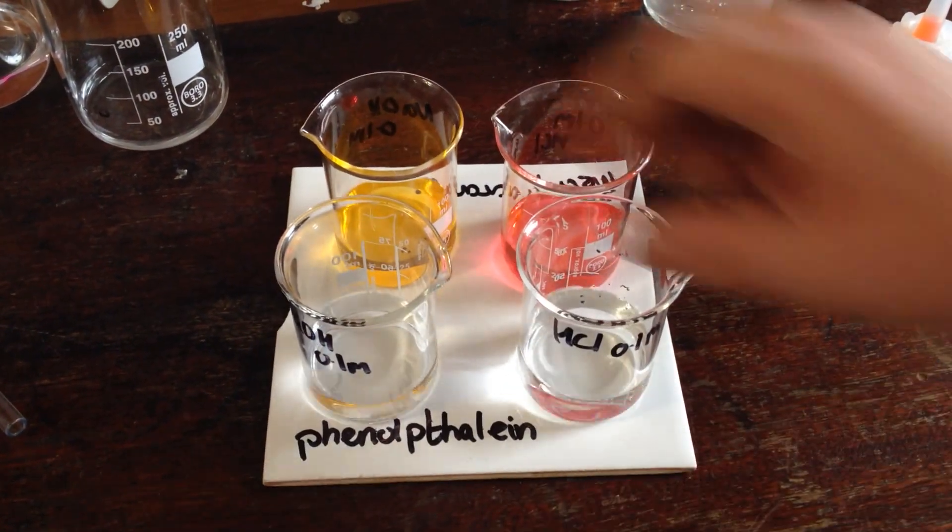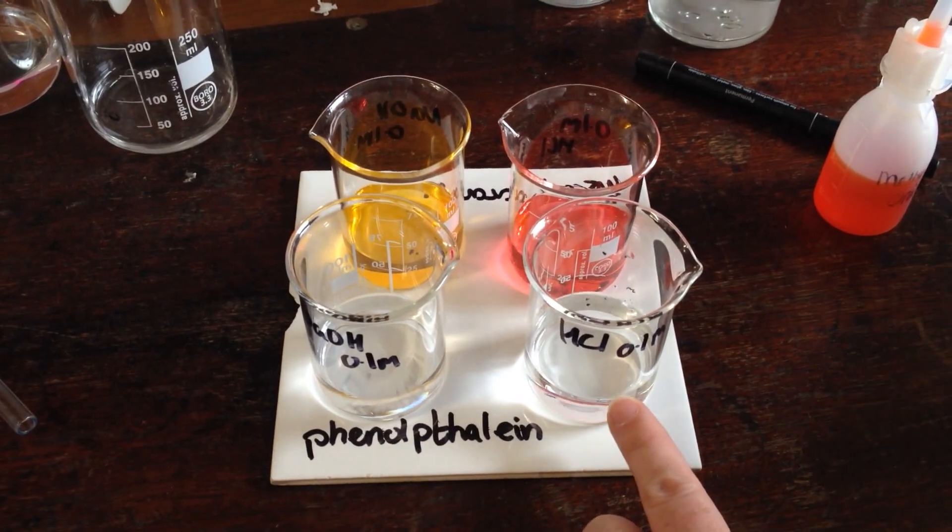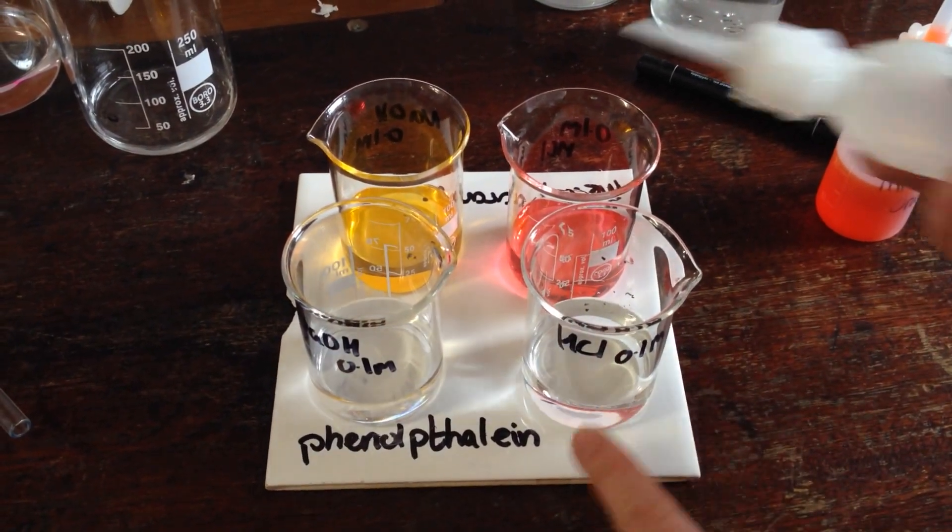Now let's have a look at phenolphthalein. Again we have 0.1 molar sodium hydroxide and 0.1 molar hydrochloric acid.